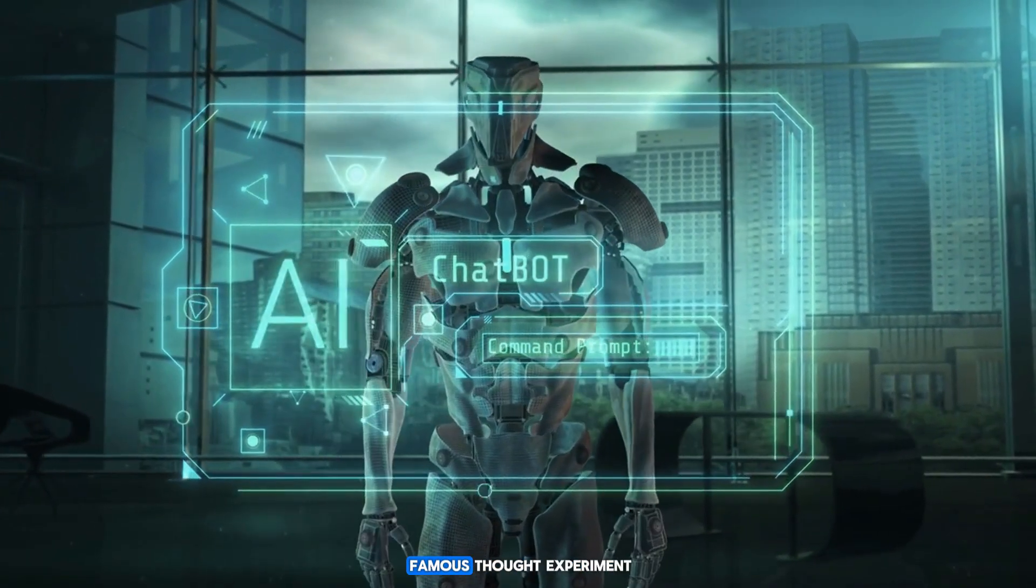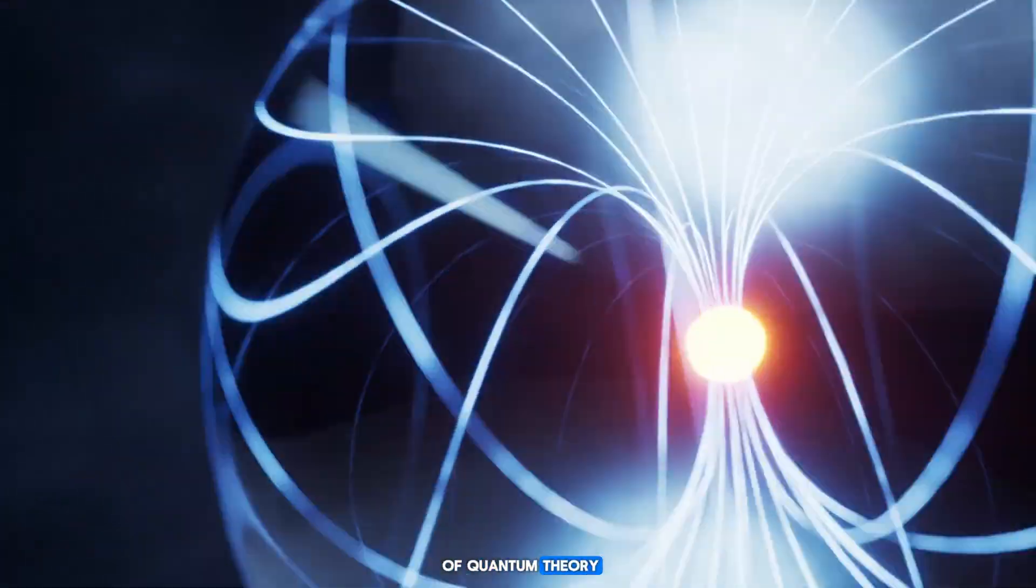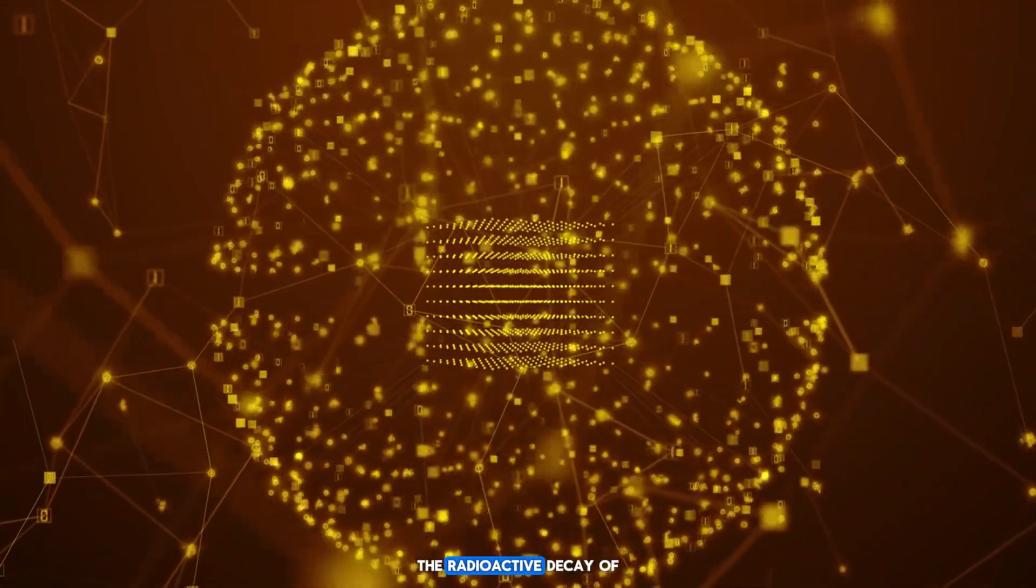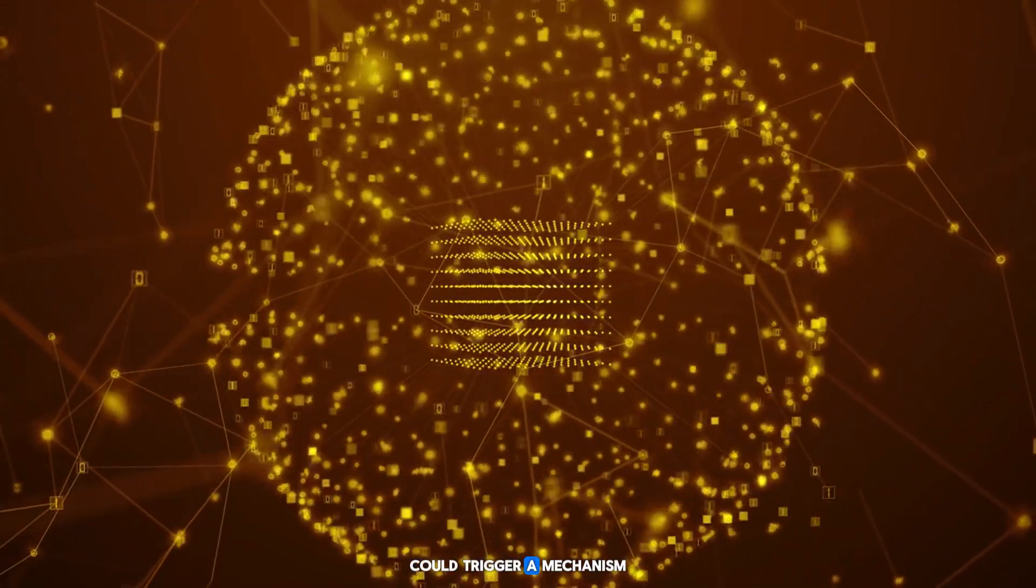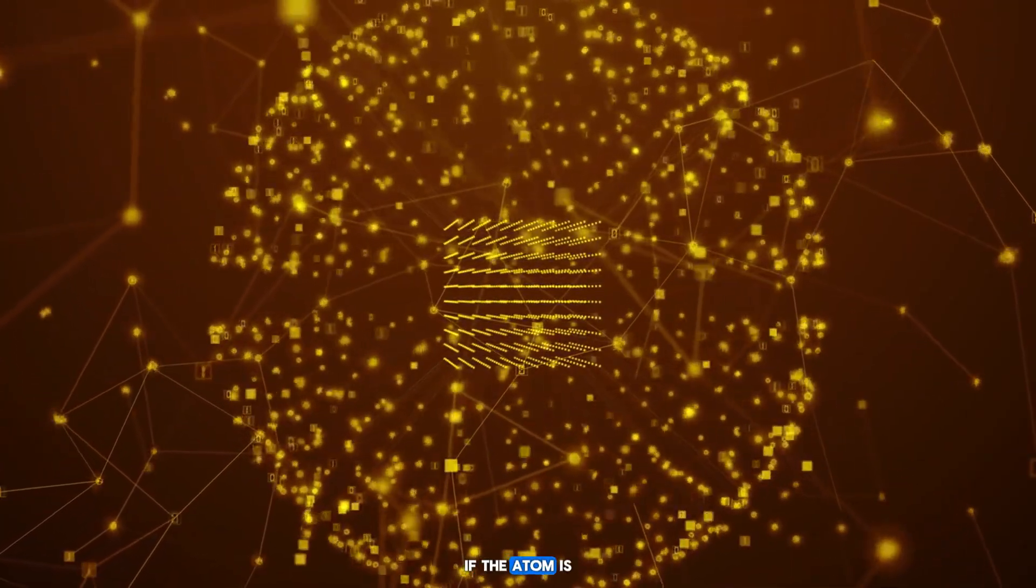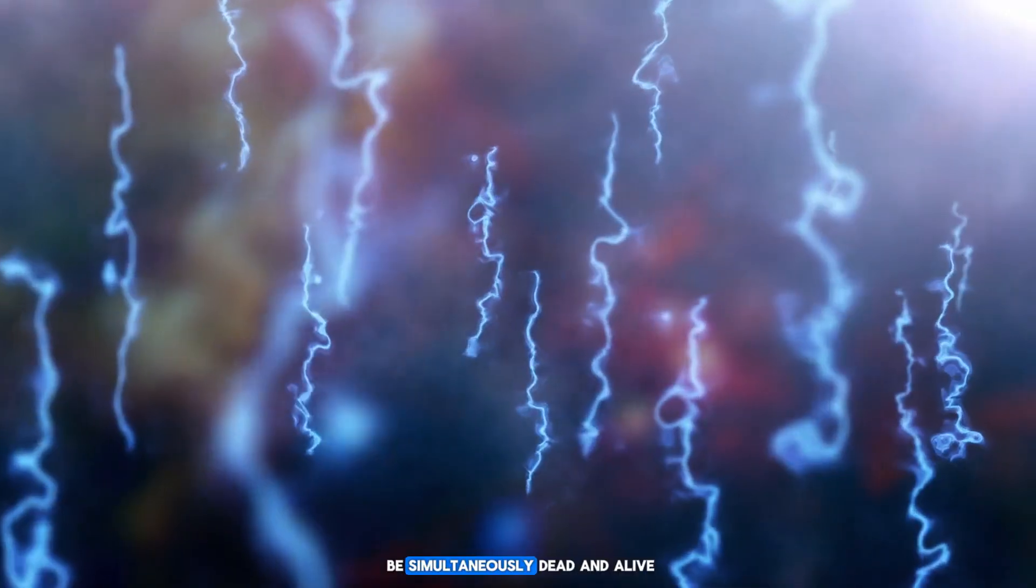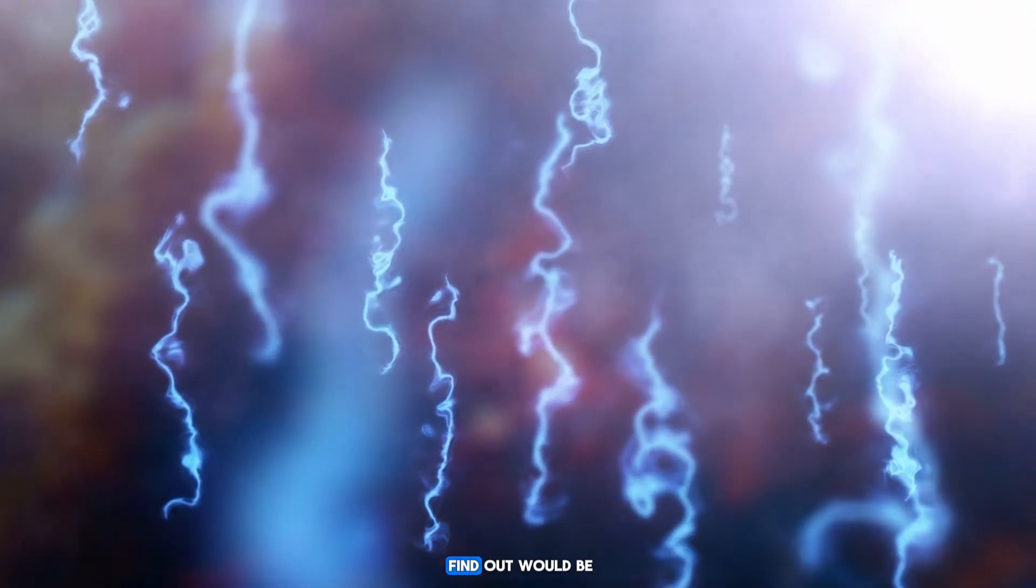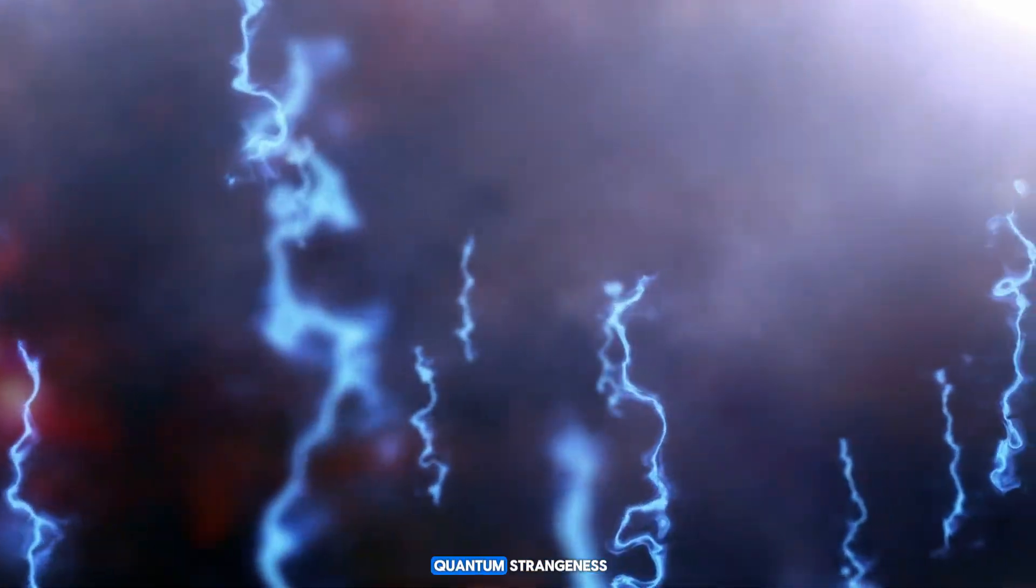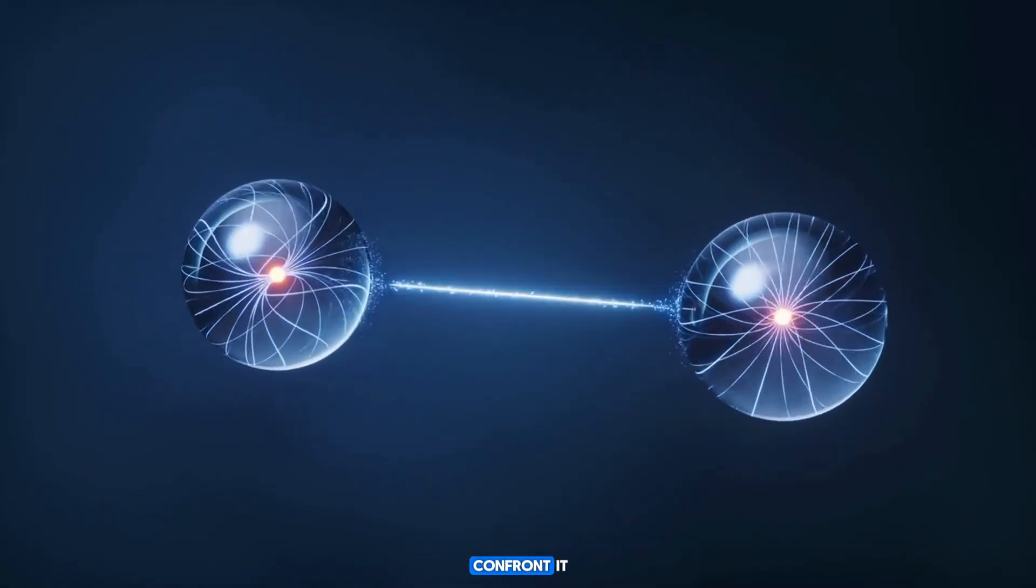In 1935, Erwin Schrödinger devised his famous thought experiment to illustrate the consequences of quantum theory. Imagine a cat enclosed in a box with a vial of poison. The radioactive decay of an atom could trigger a mechanism that breaks the vial and kills the cat. If the atom is in a superposition of decay and non-decay, the cat would be simultaneously dead and alive. The only way to find out would be to open the box. This thought experiment transfers quantum strangeness from the micro-world to everyday life and forces scientists to confront it.